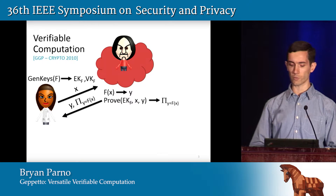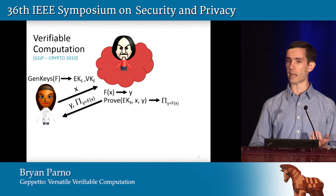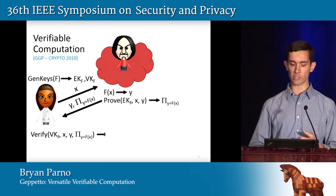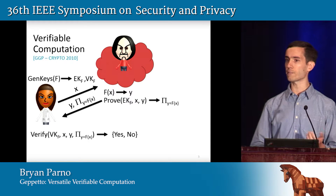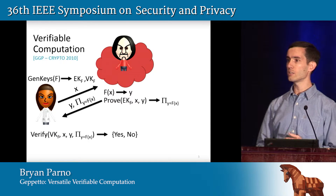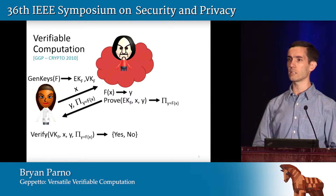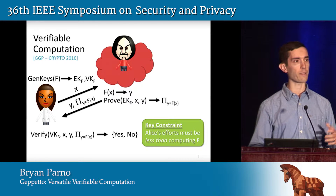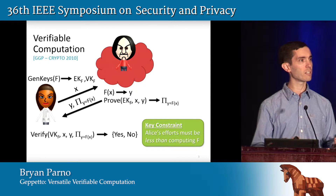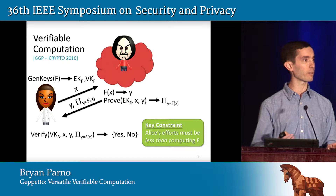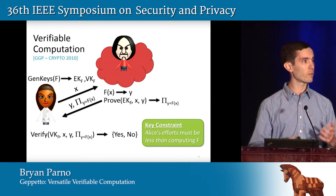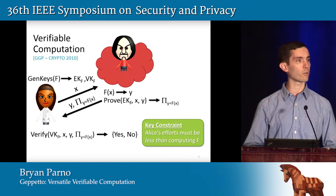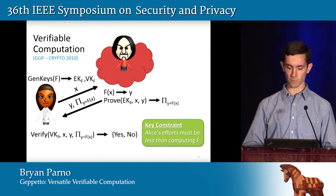We send this proof along with the output back to Alice, and she can use the public verification key to check that this is indeed the correct output. The key challenge is that we want verification to be cheaper than computing the function itself, or we haven't won a whole lot from outsourcing.